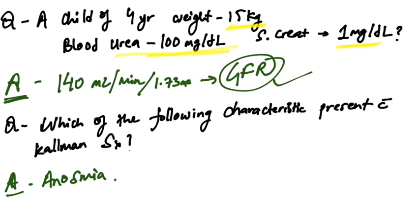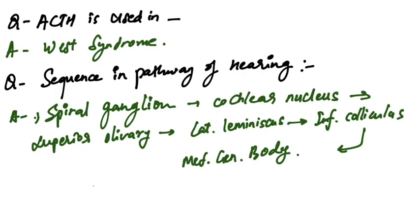Which characteristic is present with Kallman syndrome? Anosmia is the very characteristic feature present in Kallman syndrome. ACTH is used in which syndrome? The answer is West syndrome.